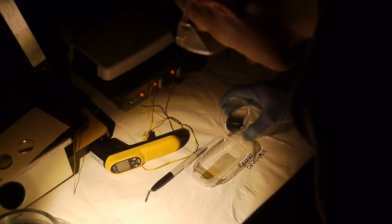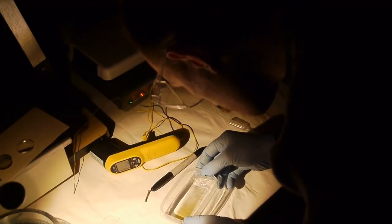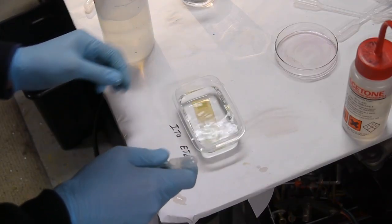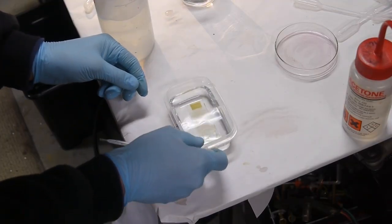After the exposure is complete, I submerge the slide in a developer solution which develops the photoresist, and then submerge it into an etching solution which will remove the conductive coating where we don't want it.